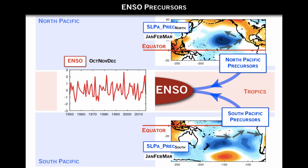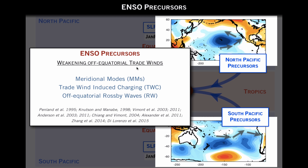In both cases you see a weakening of the trade winds in both the north and south regions. In the previous example I talked about how anomalies like these can generate meridional modes, but the reality is that these kinds of weakening of the trade winds are associated with a whole bunch of different types of ENSO precursor dynamics, which include, for example, the trade wind-induced charging associated with the subtropical cell — work by Anderson — or the more canonical equatorial Rossby waves that can be excited by these wind patterns, work by Knutson and others and Vimont.